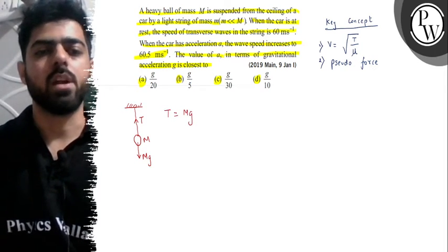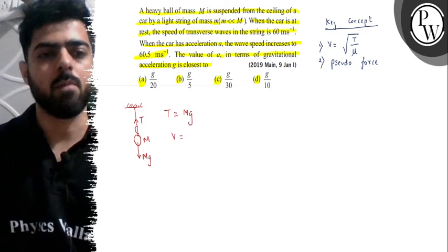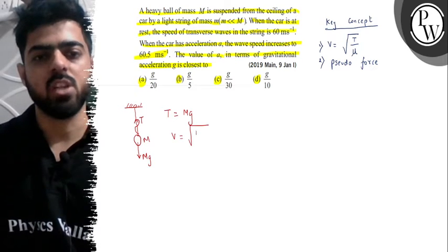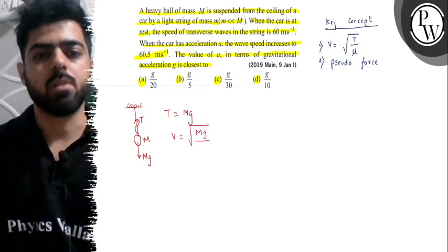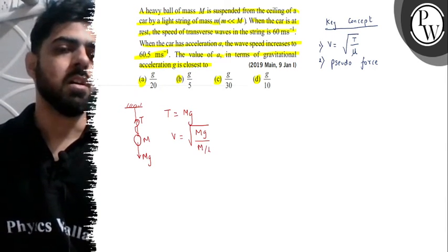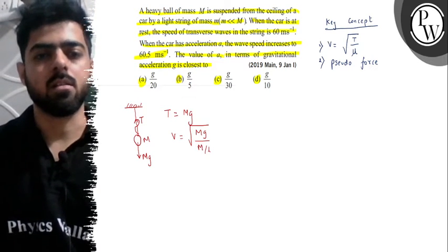So here we can say value of tension will be equal to Mg. We have value of tension. So now we can say, if we talk about velocity of wave, if we talk about traveling wave, we can say value of V equals under root Mg divided by M by L. We will keep it as is.